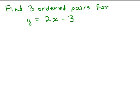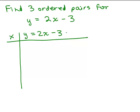So here's an example. Find 3 ordered pairs for y equals 2x minus 3. We're just going to make a table, and I'm going to pick anything I want for x, and then I'm going to figure out what y is based on that x. Any number you want for x. Let's just pick 0, 1, and 2. Simple enough?